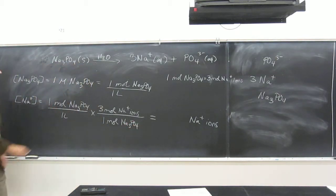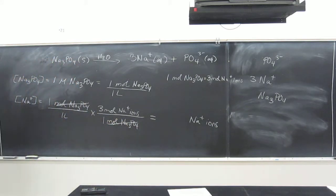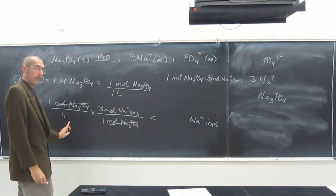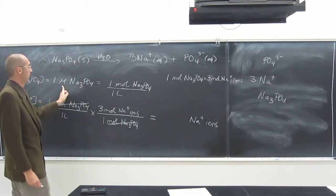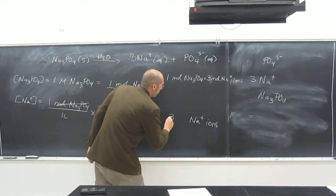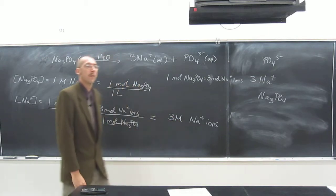So there's three moles of sodium ions for every one mole of Na3PO4, so cancel, cancel, like that. And moles per liter, remember, is molarity, okay, and since we only have one sig fig, it's going to be three molar in sodium ions, right?